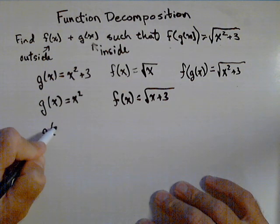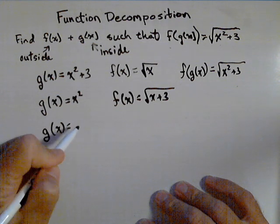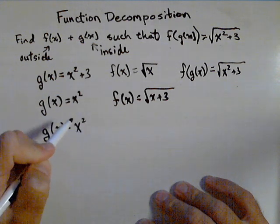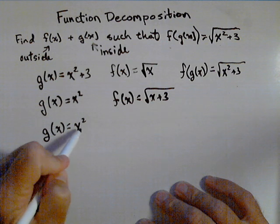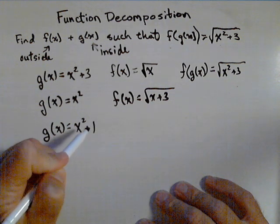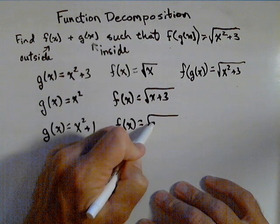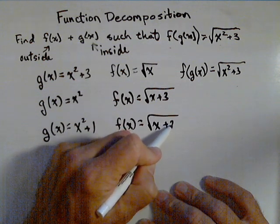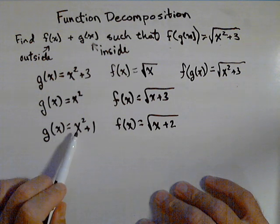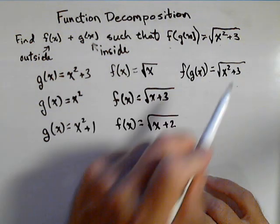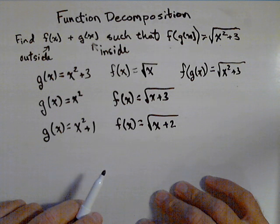Let's look at another possibility. What if I let g of x be x squared plus, let's say, one. Then, f of x would be square root of x plus two. Now, if I put this in, because the one and two add together to give me three, that also works.